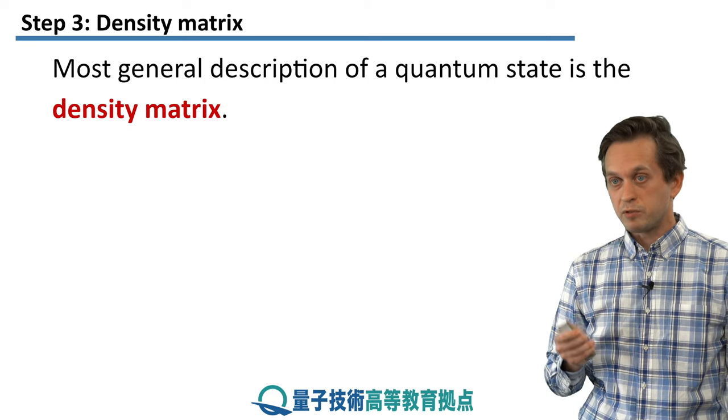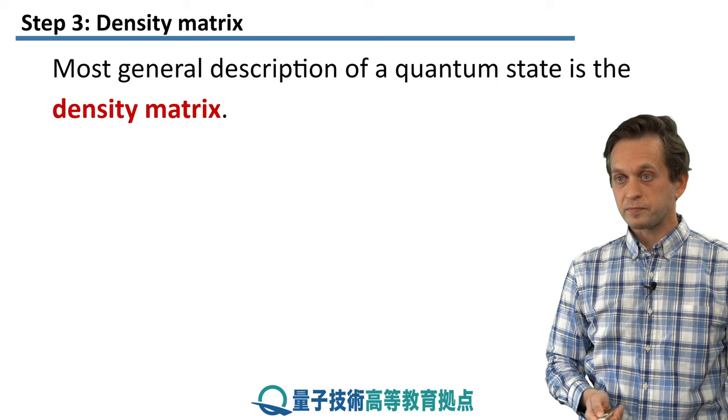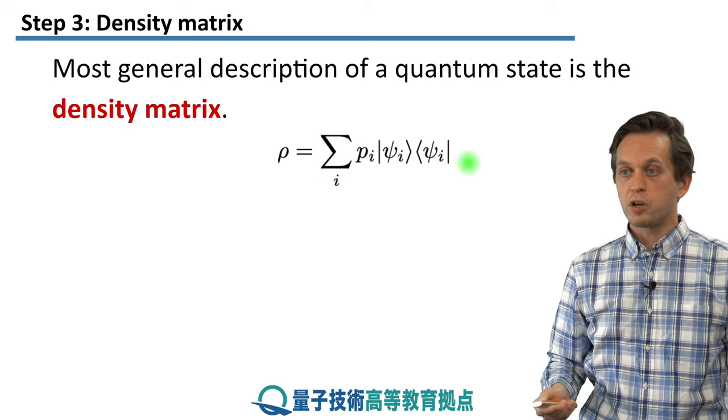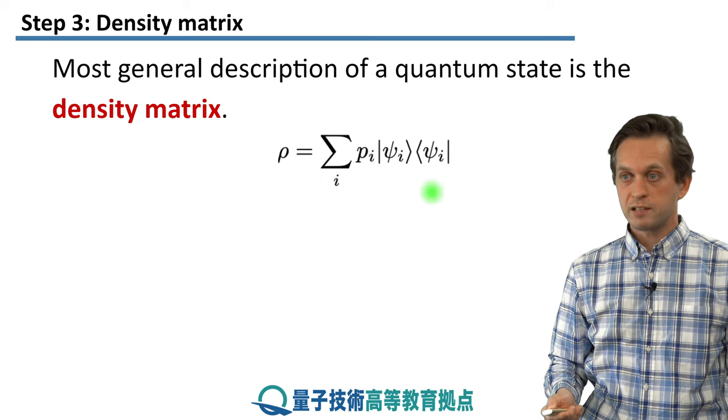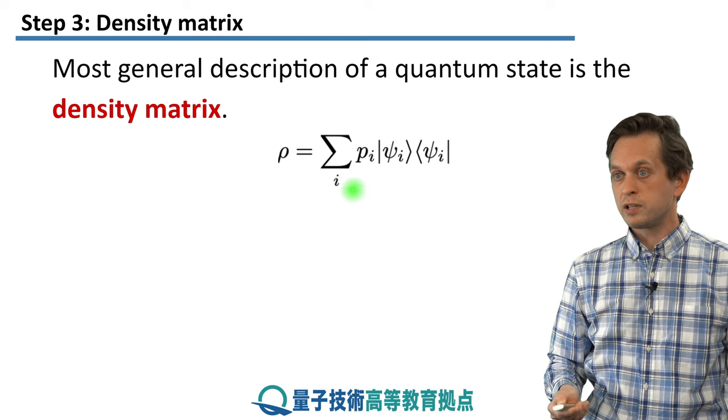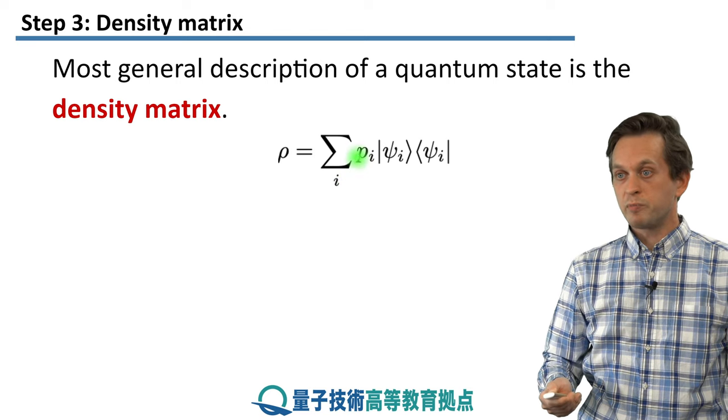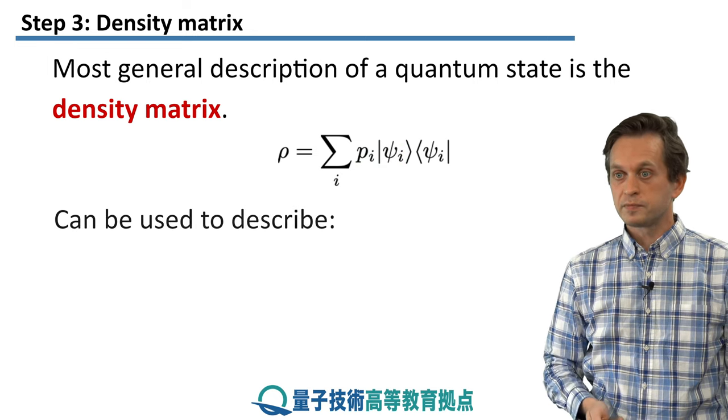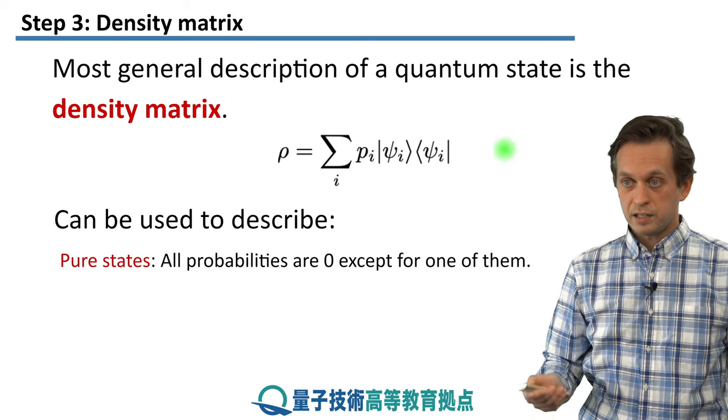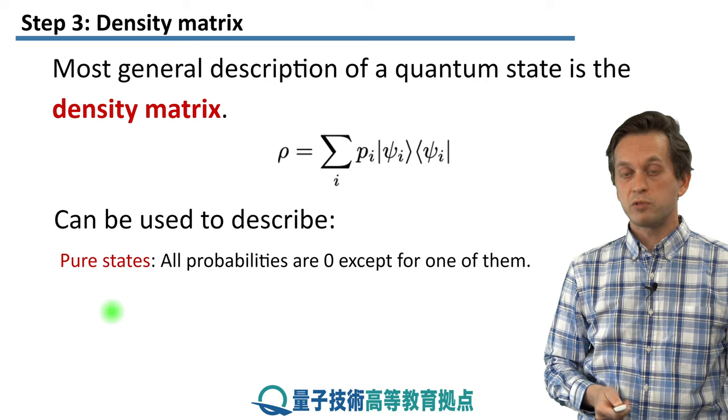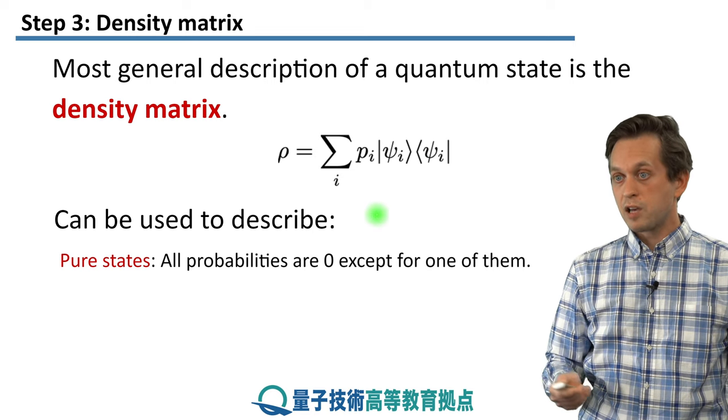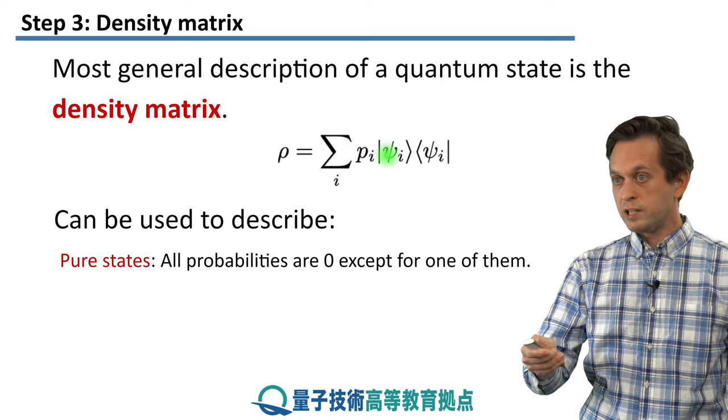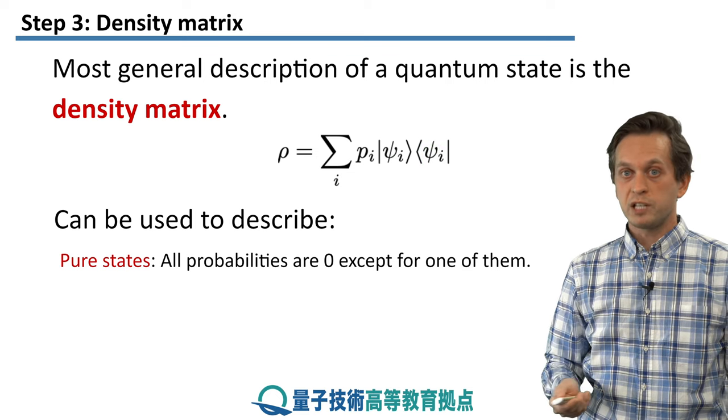So a density matrix is the most general description of a quantum state. And we write it down like this. This is just a more compact form of what we have written on the previous slides. So we have the sum over all the index of index i, where with some probability Pi we are projecting onto the pure state psi i. And this formalism, this density matrix, can be used to both describe pure states. In that case, all of these probabilities are 0 except for 1.